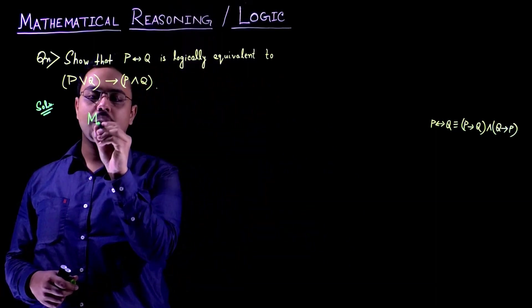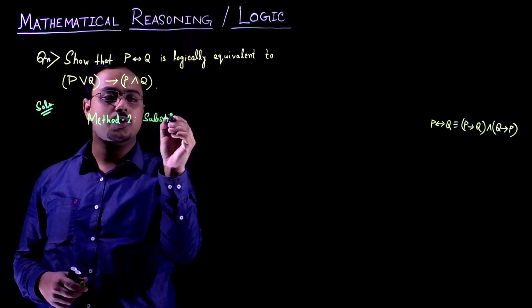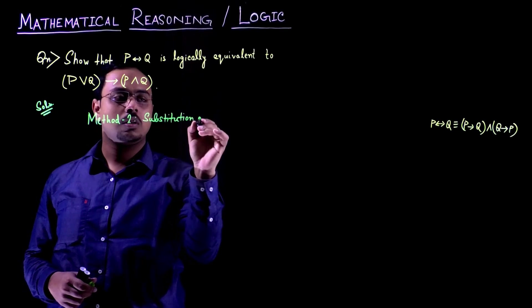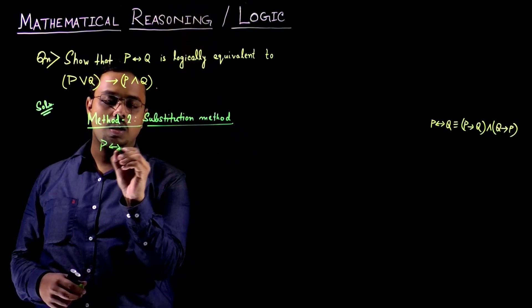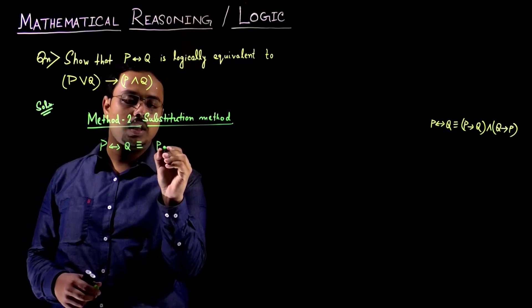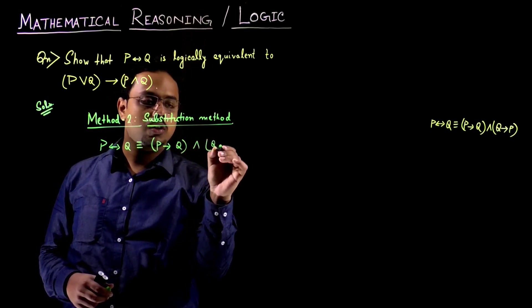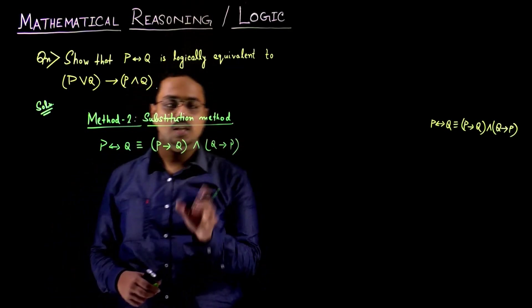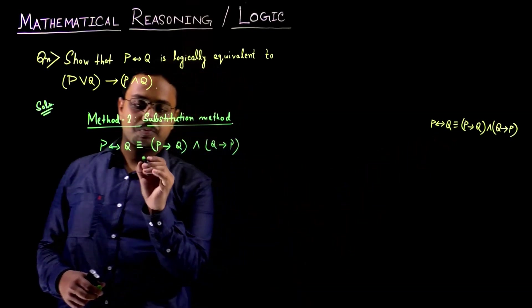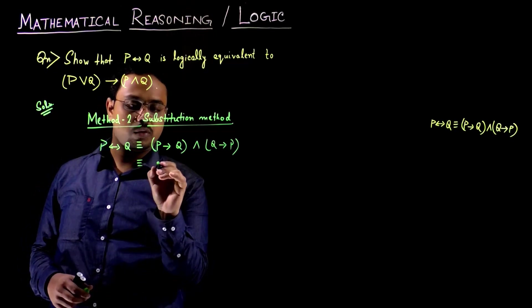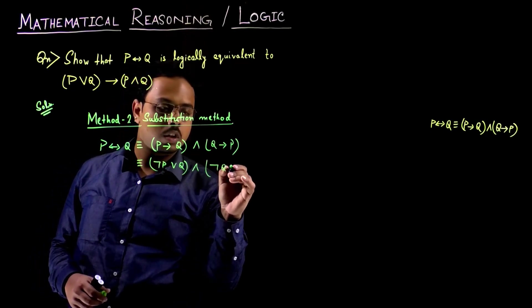We will now solve this problem using another method — Method 2, the substitution method. P if and only if Q is logically equivalent to P implies Q AND Q implies P. This is the biconditional elimination rule which we have already seen. So this is equivalent to NOT P OR Q AND NOT Q OR P.